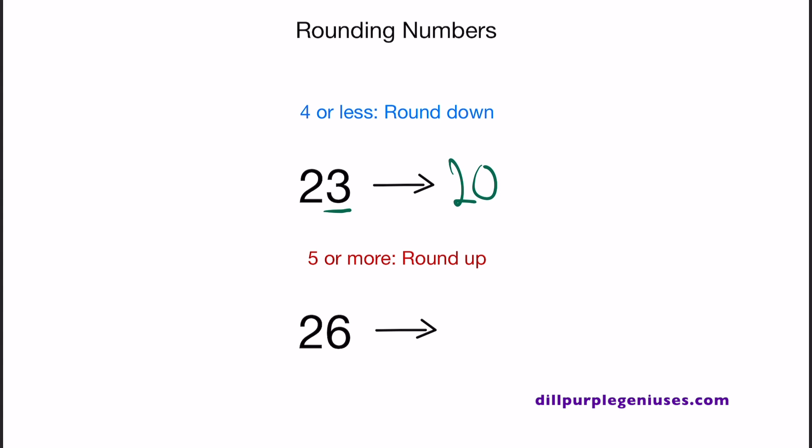When a number is 5 or more, you have to round up. Let's round 26 up to the nearest tens place. When you look at the right of the tens place, you have 6. 6 does belong in the category that is 5 or more, so we need to round up 26. When you round up 26 to the nearest tens place, you should come up with 30.